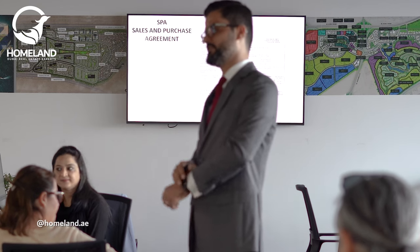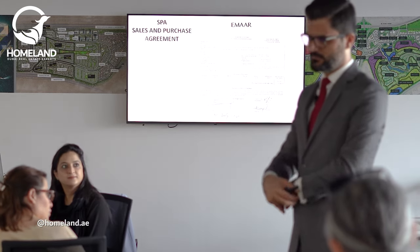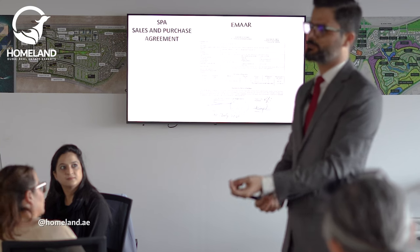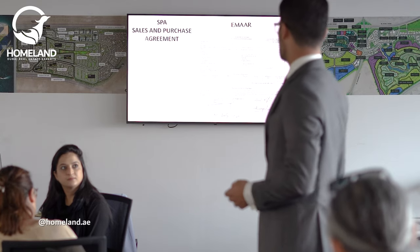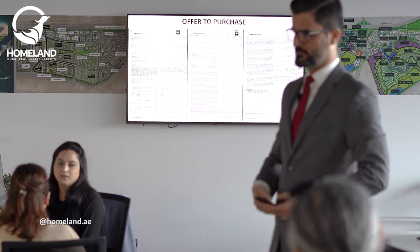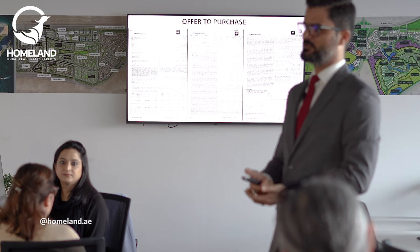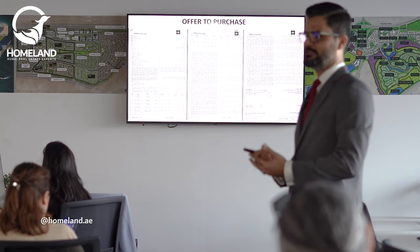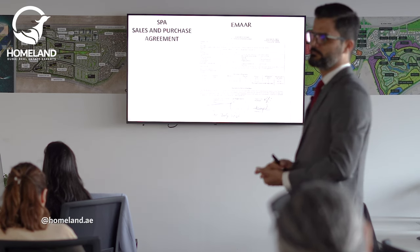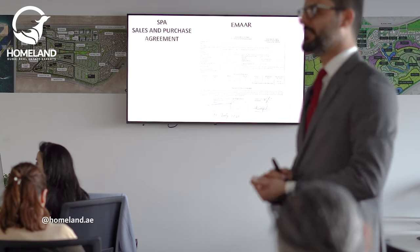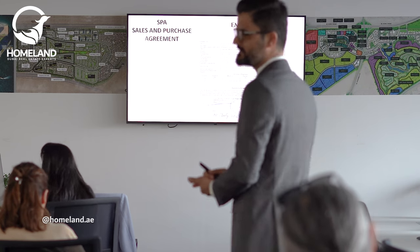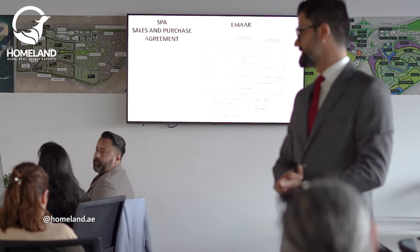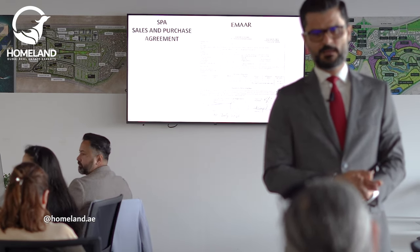Once that is done, if the client likes the unit and wants to go ahead, at the time of booking you generate an OTP. The developer's salesperson generates an offer to purchase, which in EMAAR looks like a reservation agreement — this is a booking. This will be signed by the client and by the agent. Details of the property, details of the unit, and payment plan will all be mentioned there. Once the offer to purchase is signed and the down payment is made, then EMAAR will generate a Sales and Purchase Agreement. This is the contract between EMAAR and the client. Once the SPA is signed, the check will not be refundable — this is your first legal contract. As an agent, every document generated, it's your duty to take a picture and keep a copy.